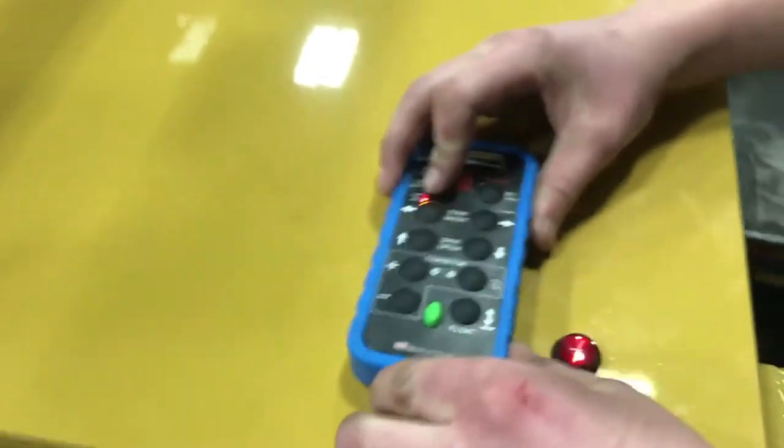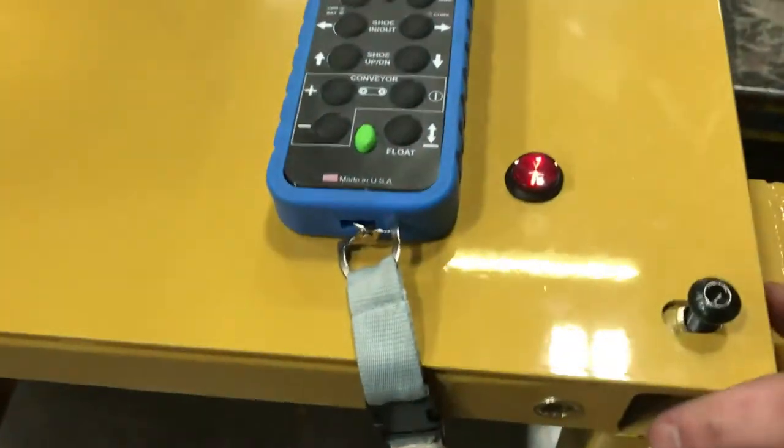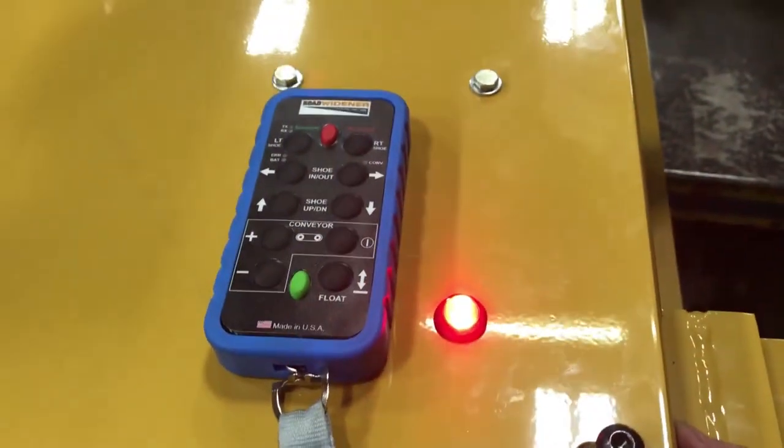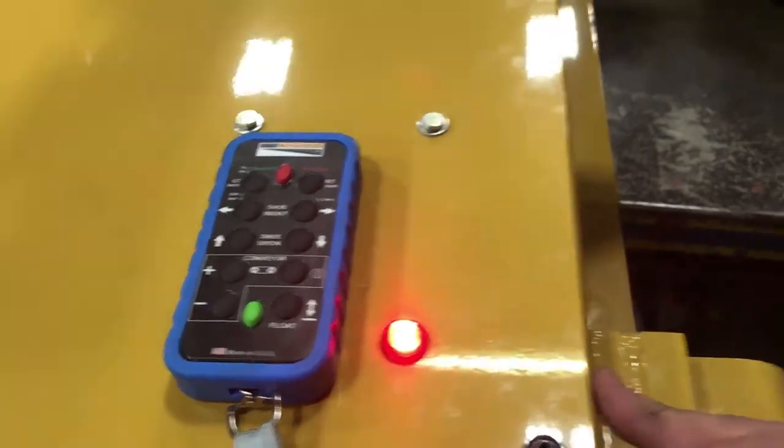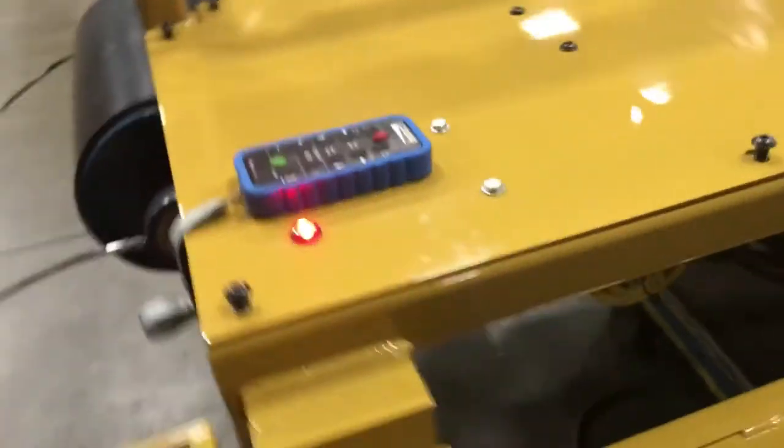With power on, you will see that the red LED is now illuminated. What you also must understand is that we have the right hand brain box receiver unplugged. You'll see that right here.